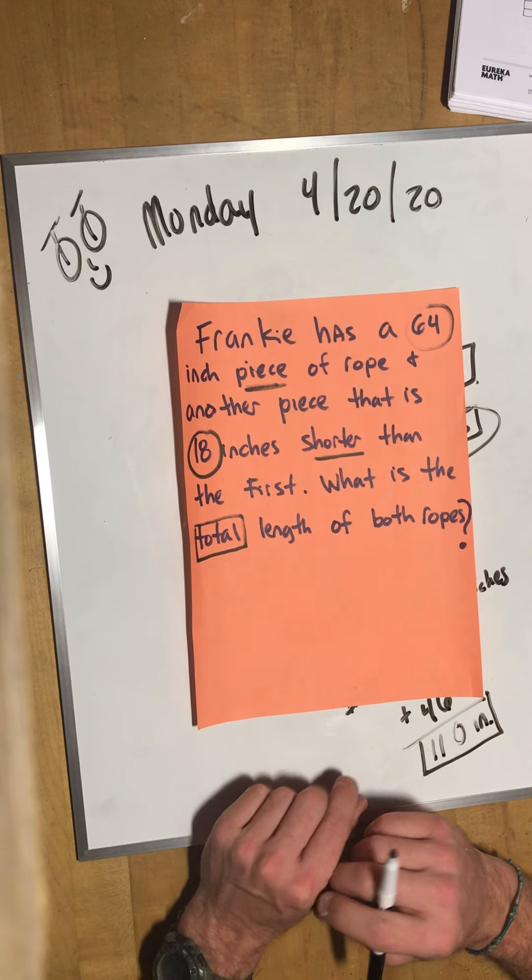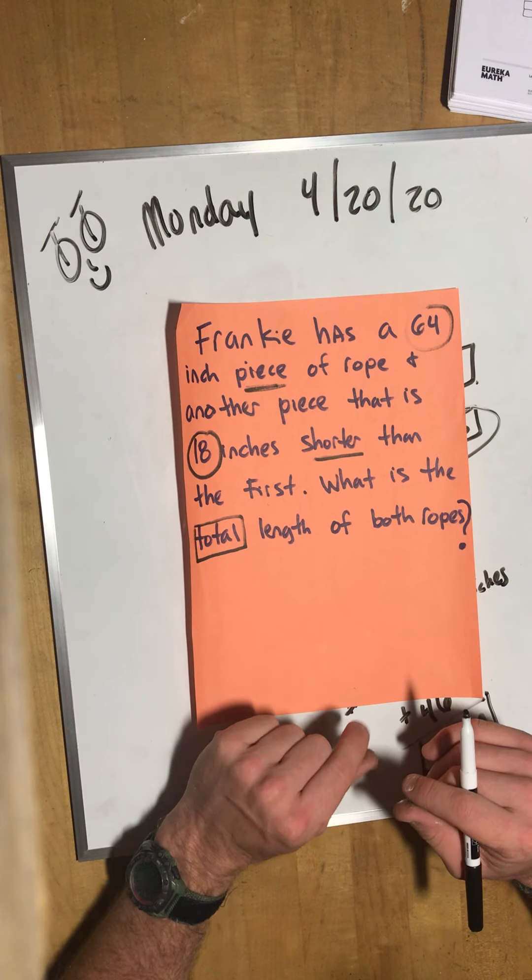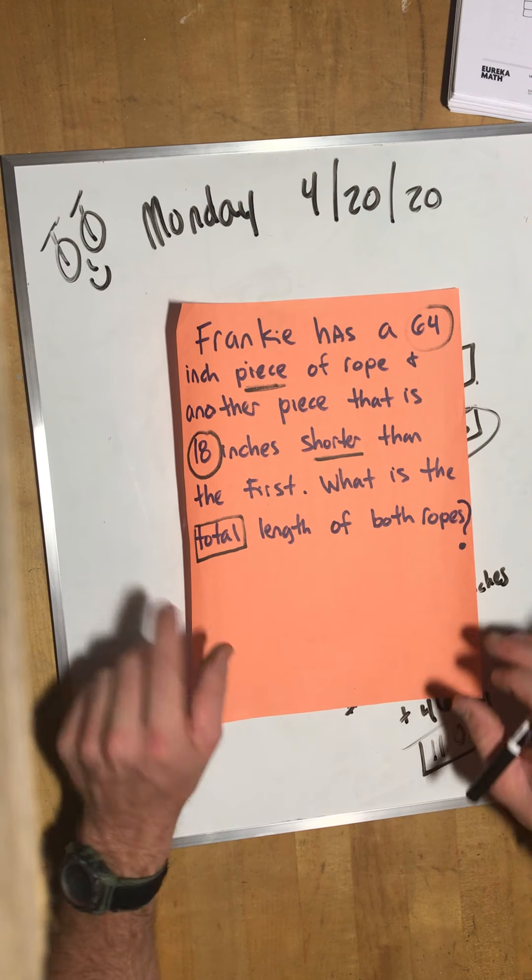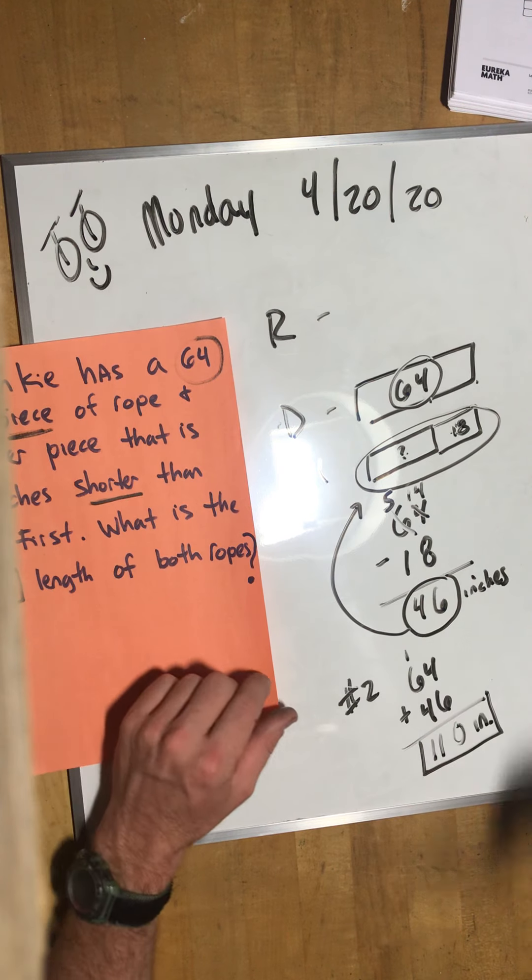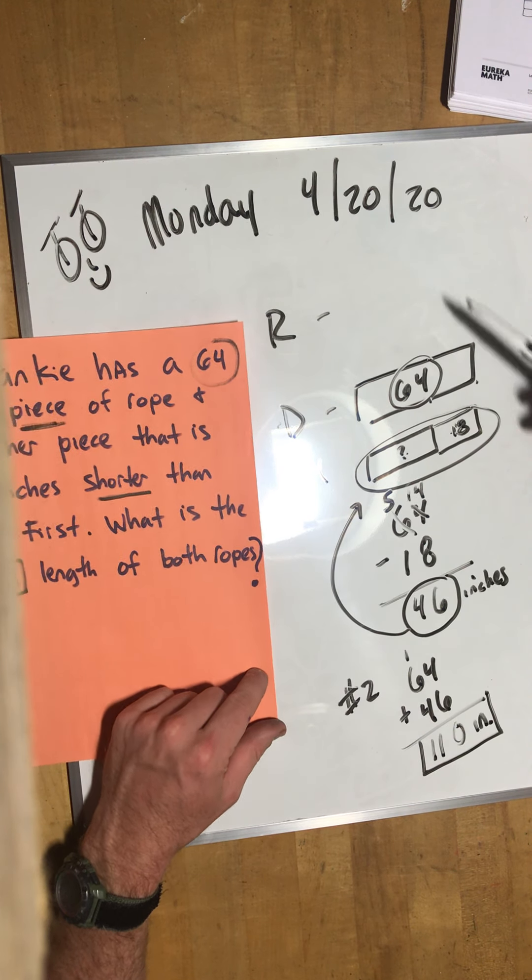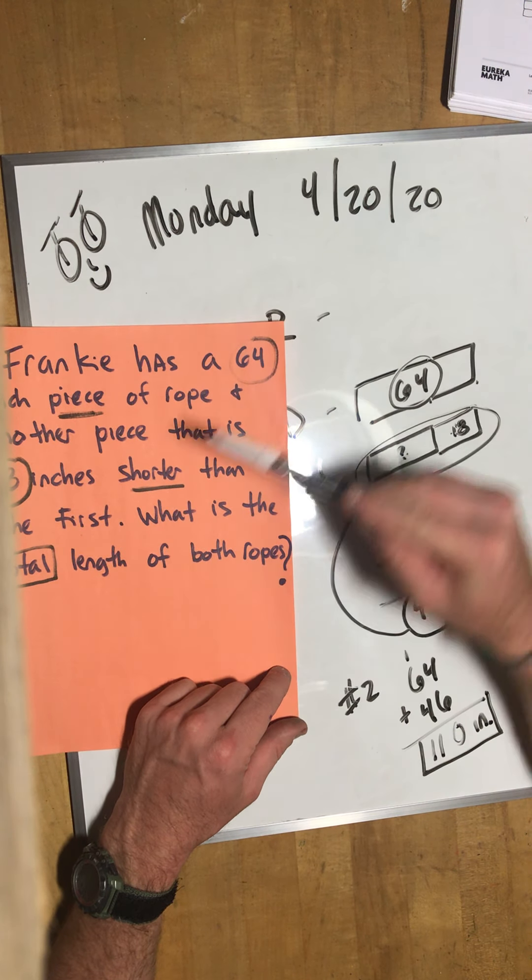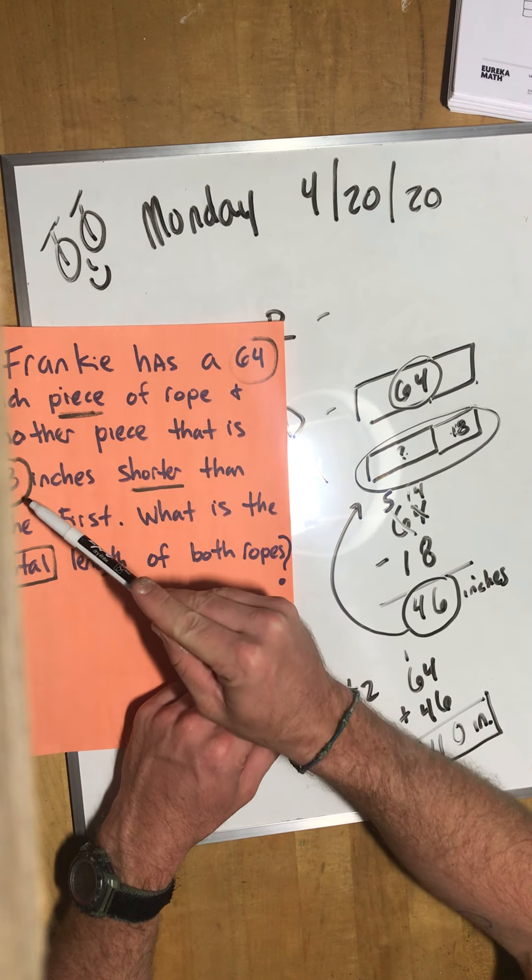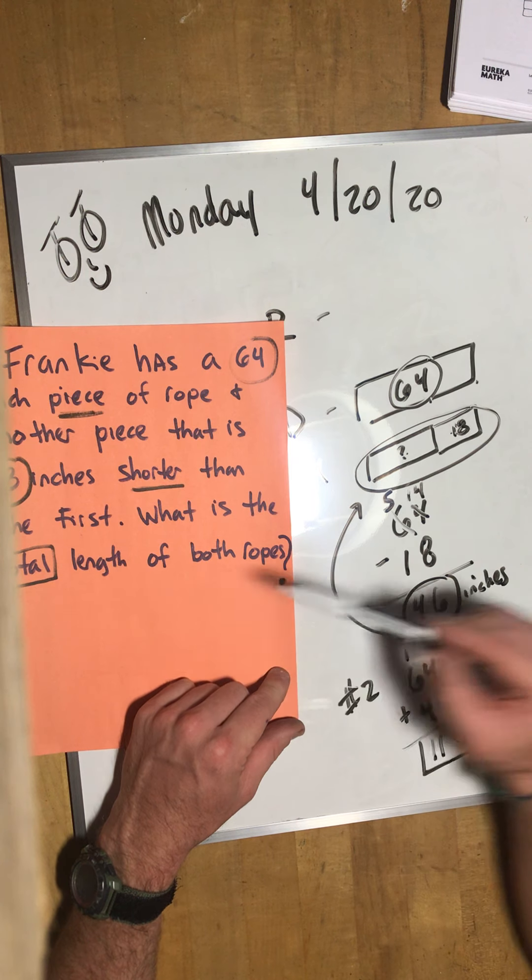1 plus 6 is 7 plus 4 more is 11. 110 inches for the first one. Now the exit ticket is going to be very similar to this one. The numbers will be different but it's going to be two steps just like this one.